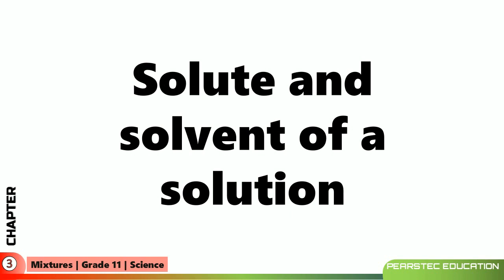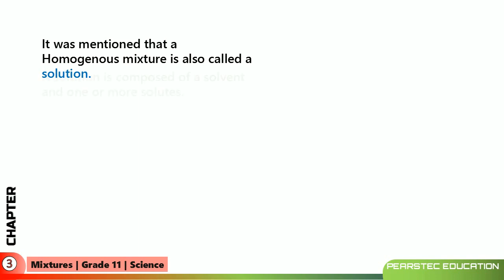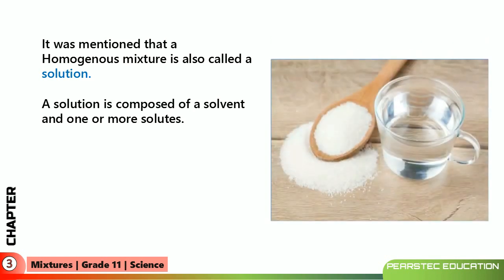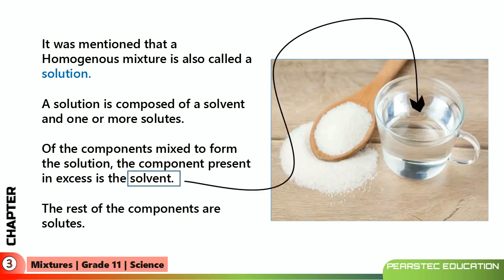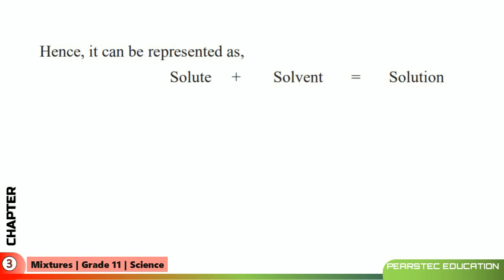We will begin by understanding solute and solvent. A homogeneous mixture is also called a solution. A solution is composed of a solvent and one or more solutes. Looking at this picture, there is salt and water — which one is the solvent and which is the solute? Of the components mixed, the component present in excess is the solvent and the rest are solutes. Here, the solvent is water and the solute is the salt.